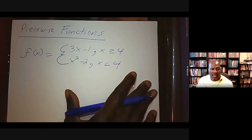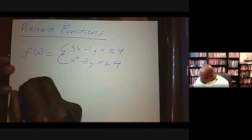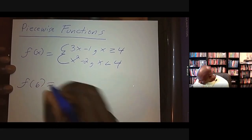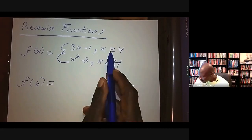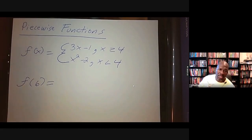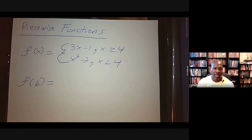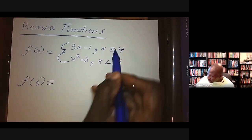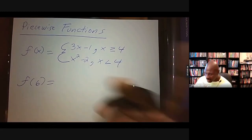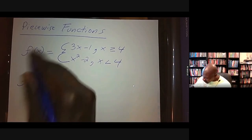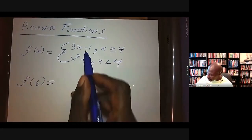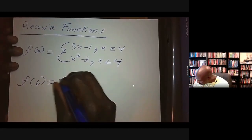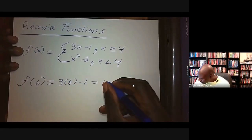Let's evaluate this piecewise function — say I want to find f(6). When you evaluate a piecewise function, you only use one piece: the piece where the value fits. Six is greater than or equal to four, so I use that piece: f(6) = 3(6) - 1 = 18 - 1 = 17.